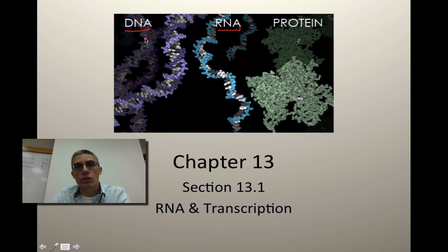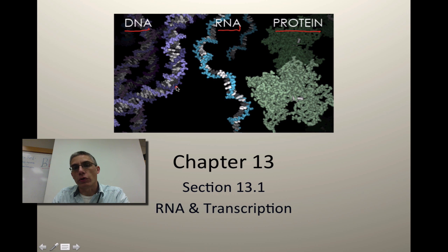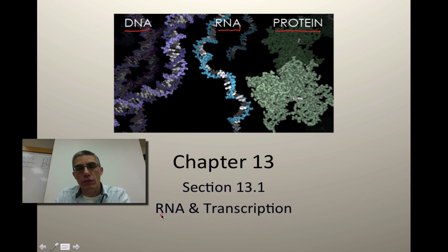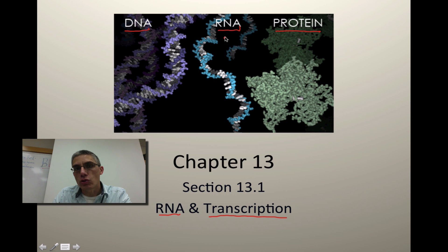What we need to think about is that there is lots and lots of information coded in that DNA, but what we need to do is take that information and actually produce the proteins that are used to build that organism. So in chapter 13, that's what we're going to be looking at. In section 13.1, we are going to look at the different types of RNA, and then we're going to look at the special process called transcription, which is going to take that coded message on the DNA and change it into a form, which is going to be RNA, that can actually be used to produce the protein.